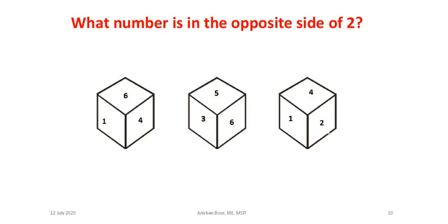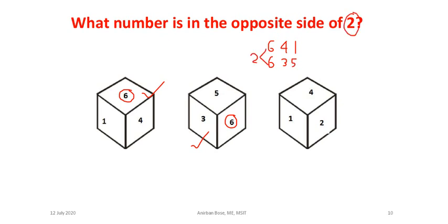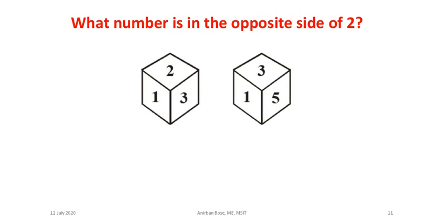Next problem: what number is opposite to 2? Comparing two dice, 6 is common. Write in clockwise direction: 6, 4, 1 and 6, 3, 5. So 4 and 3 are opposite, 1 and 5 are opposite, and 6 is opposite to 2. Answer is 6.